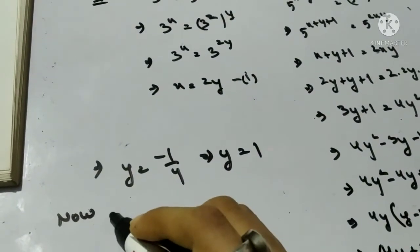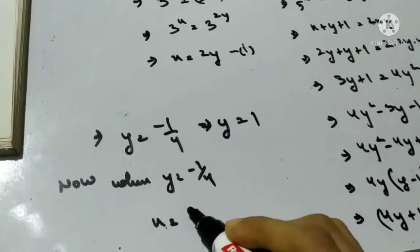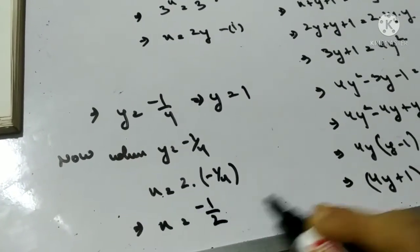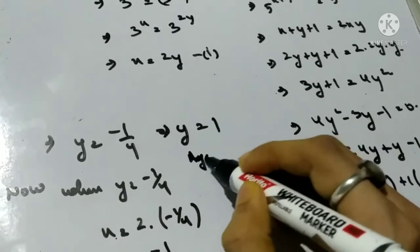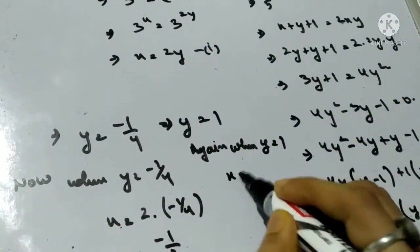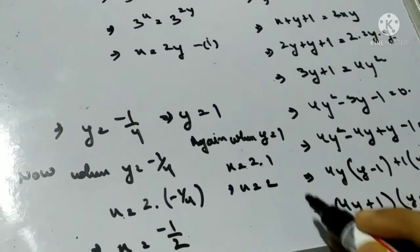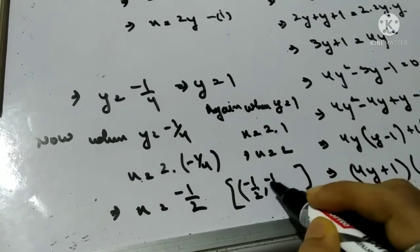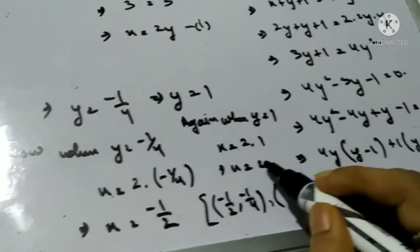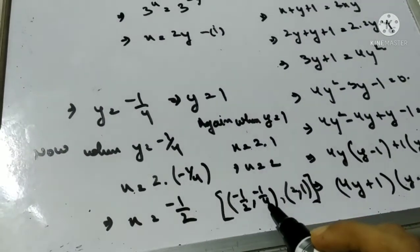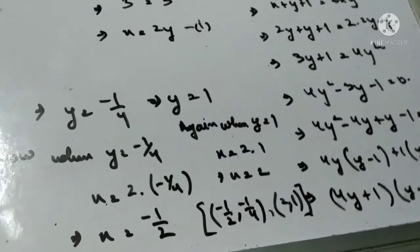When y equals minus 1/4: x equals 2 times minus 1/4 equals minus 1/2. When y equals 1: x equals 2 times 1 equals 2. Therefore the required solutions are (minus 1/2, minus 1/4) and (2, 1). Checking the back answer: 2, 1 and minus 1/2, minus 1/4 — correct.